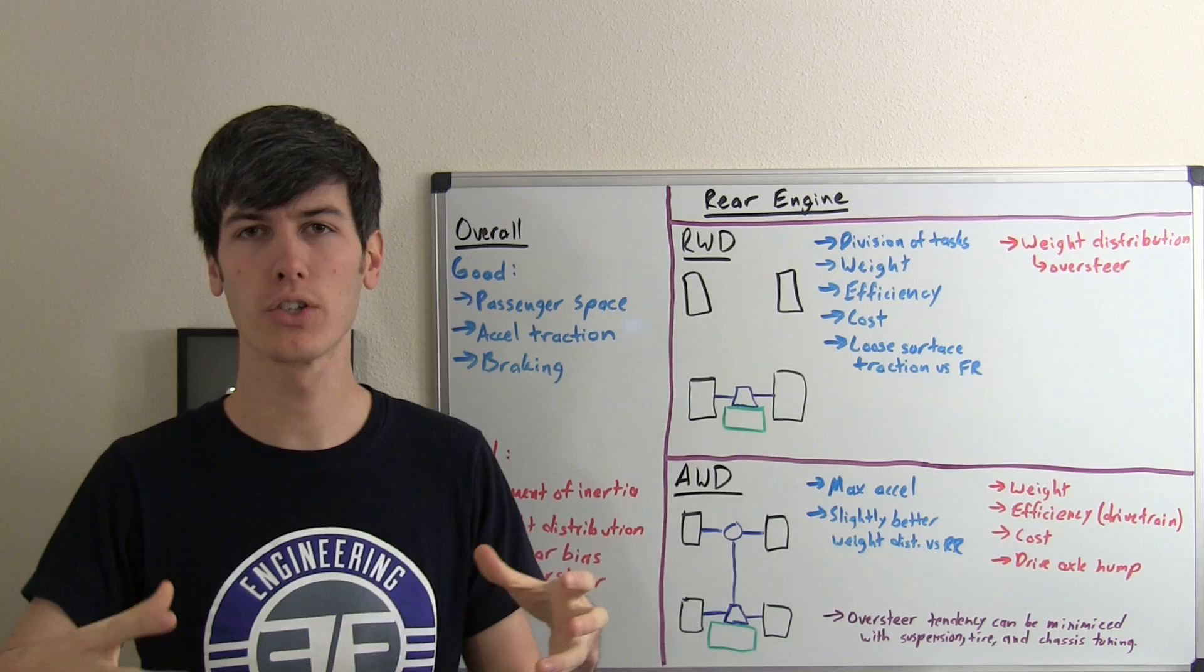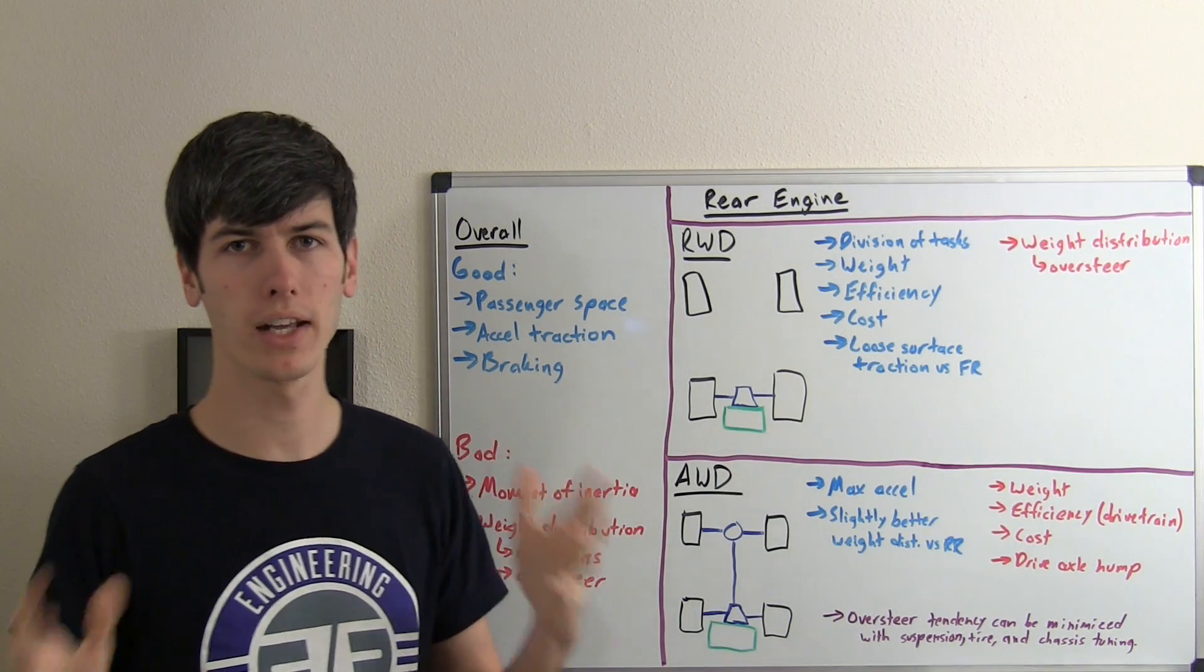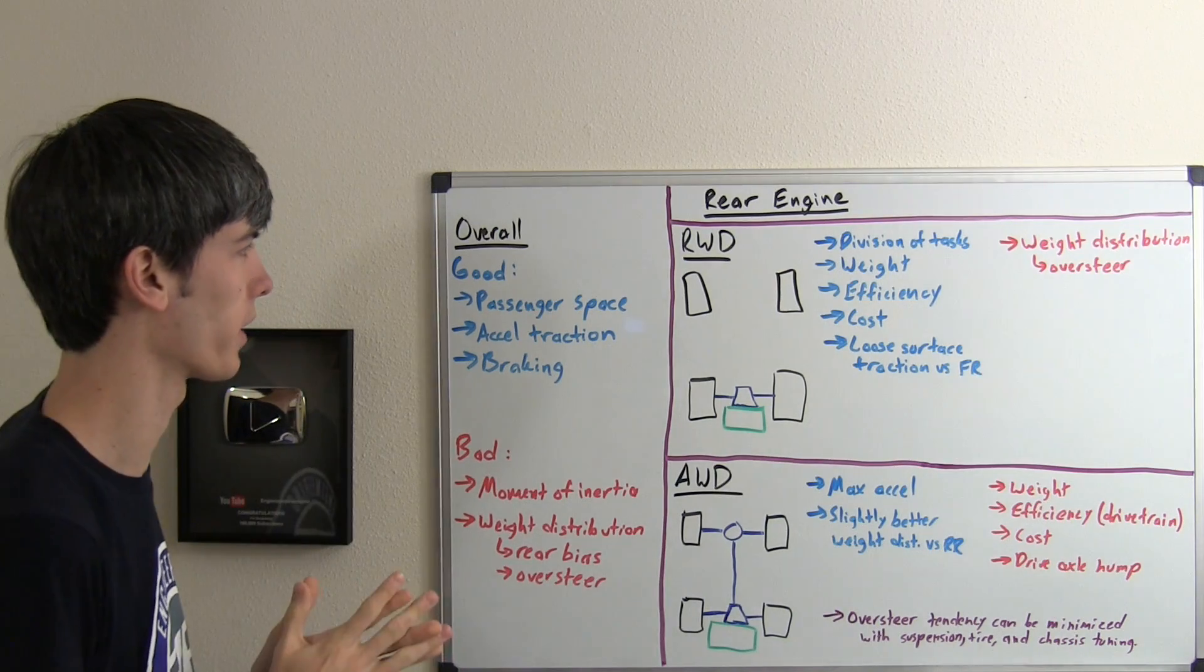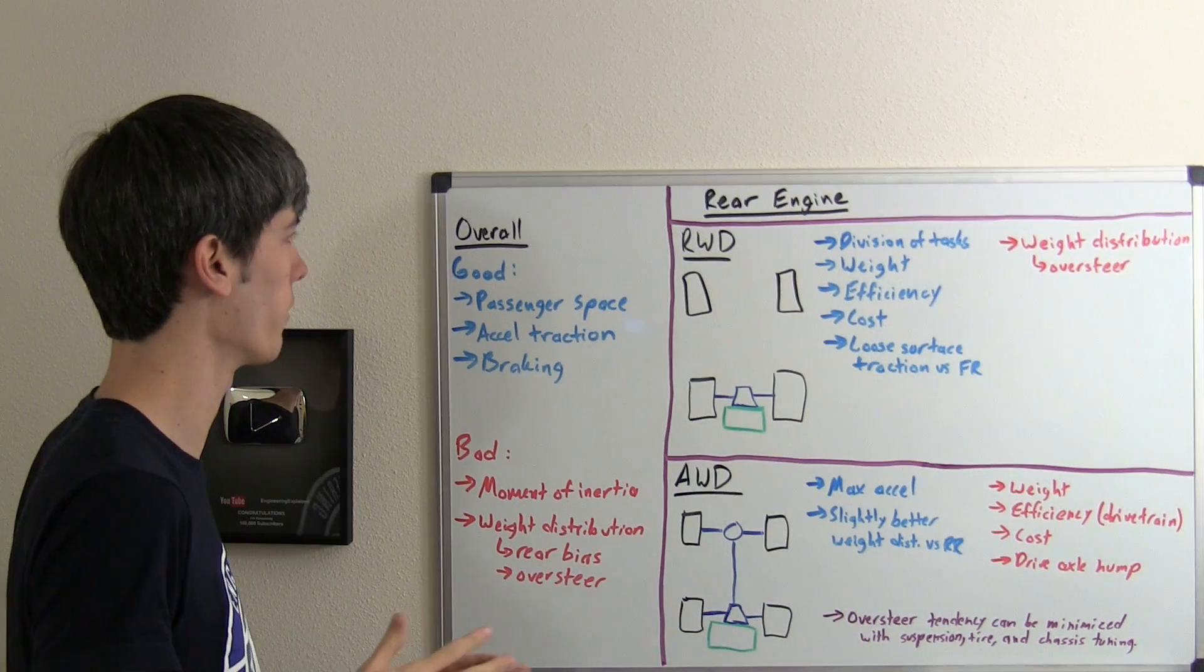A rear engine means that the engine is located behind the rear drive axle. So what are some of the advantages and disadvantages of a setup like this? First I'm going to talk about overall, and then go into rear-wheel drive versus all-wheel drive.